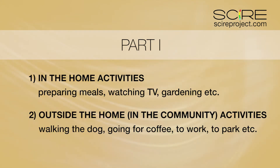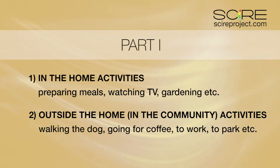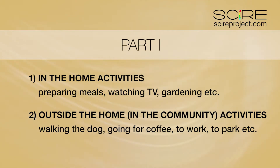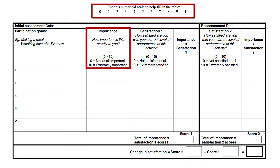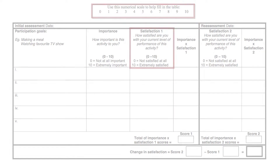We first ask people what activities they want to use their wheelchair for within the home, and what activities they want to use their wheelchair for outside the home in the community. We then get them to rate how important those activities are on a scale of 0 to 10, with 0 being completely unimportant and 10 being extremely important, and rate their level of satisfaction with those activities on the same scale — 0 being completely unsatisfied and 10 being extremely satisfied.